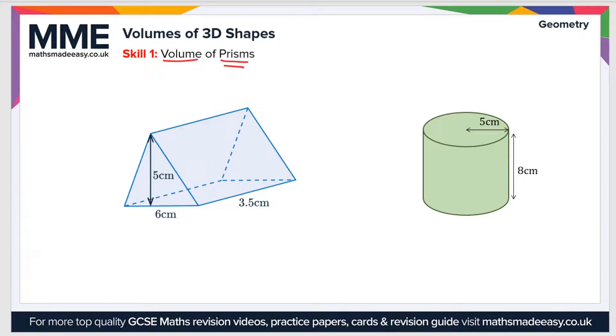In order to calculate the volume of a prism, we have to work out the area of the cross section. So the cross section is the 2D shape that's at the end of the prism, and in this case it's a triangular prism, so we'll use the formula for the area of a triangle, which is area equals a half times base times height.